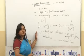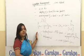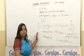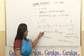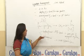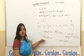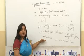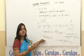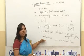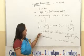Sigmatropic Rearrangements take place in two ways: one is suprafacial rearrangement and the other is antarafacial. As the names indicate, suprafacial means towards the same face, and antarafacial means towards the opposite side.